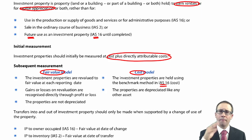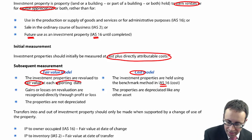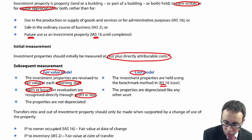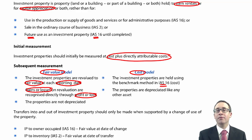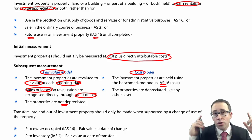Under the fair value model — much more relevant and widely used — if you are holding land and buildings for capital appreciation purposes, you value it to fair value at each reporting date. Any gains or losses are taken straight to profit or loss, because the assumption is there is a market available to dispose of the property, so you can make that gain or loss reliably. That means we take it to profit or loss rather than storing it in other comprehensive income. And importantly — if you're treating it at fair value at each reporting date with gains and losses to profit or loss, do not depreciate it.